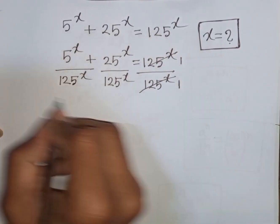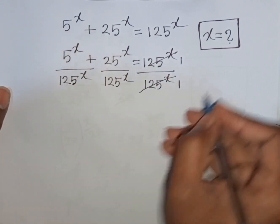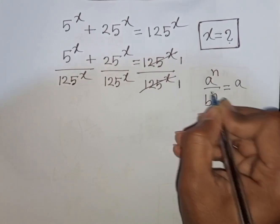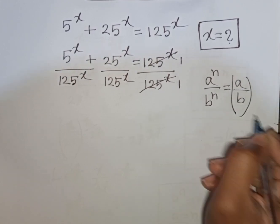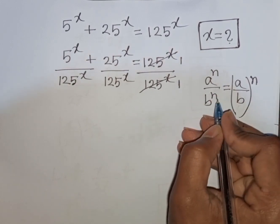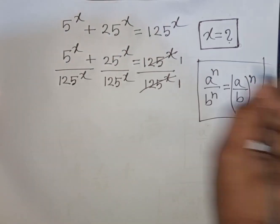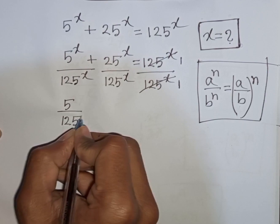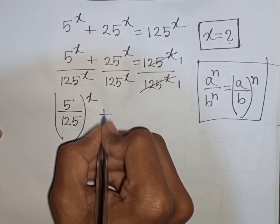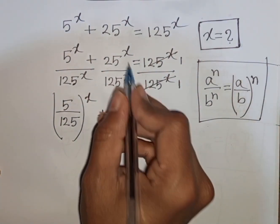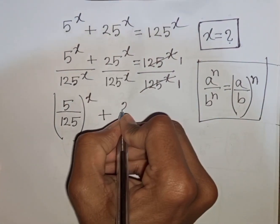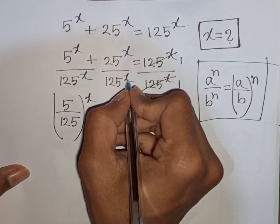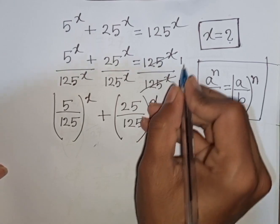Now from here we see x — same power but different base. Remember this formula: a power n over b power n is equal to (a over b) bracket common power n. That means n is the same power but different base. So according to this exponential rule, you can write here (5 over 125) bracket power x, plus again x — same power but different base. According to this formula, you can write (25 over 125) bracket power x is equal to 1.